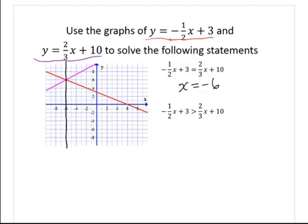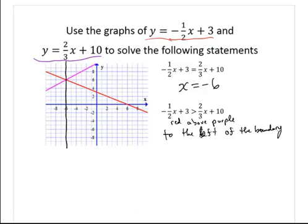Now we have the inequality: where is negative one-half x plus 3 greater than two-thirds x plus 10? So where is the red above the purple? In this case it happens to the left of the boundary. The boundary value is negative 6, so to the left of negative 6 means when x is less than negative 6.